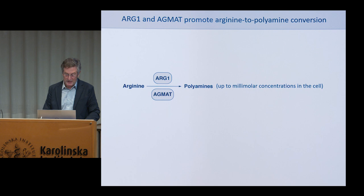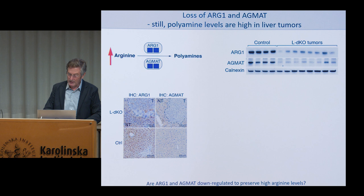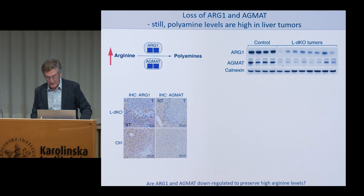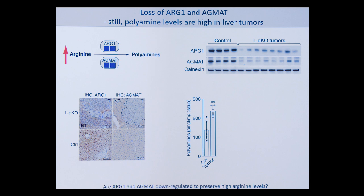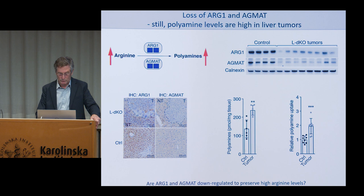Polyamines are extremely abundant in liver cells, accumulating up to millimolar concentrations, so it would make sense that the cell would go to great lengths to produce them. However, much to our surprise, we found that the enzymes which convert arginine to polyamines are also switched off — despite the fact that polyamine levels were extremely high in these tumors, just like what we'd seen for arginine. The biosynthetic pathway is down, but the level of the product is high. We then showed that the high level of polyamines is due to increased import of polyamines. This was important because it told us that the arginine pool and the polyamine pool are uncoupled from each other — the arginine is not accumulating to produce high levels of polyamine; arginine comes in through transport and polyamines do as well.